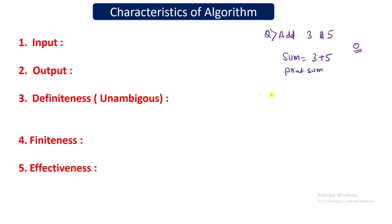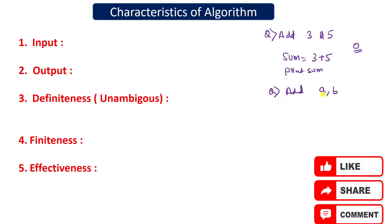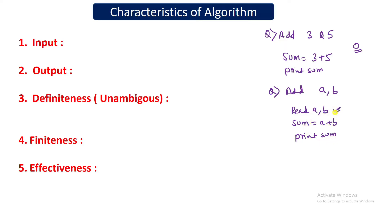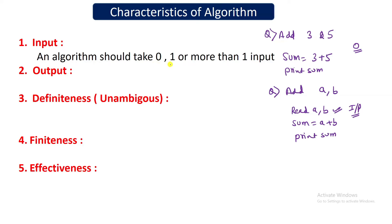There can be problems where you read numbers from the user. For example, if the question says add two general numbers a and b, then the algorithm asks the user to enter the values of a and b, then adds a plus b, stores the answer in sum, and prints sum — taking two inputs. In some questions you can take just one input, such as entering a number and printing it. So an algorithm should take zero, one, or more than one inputs.